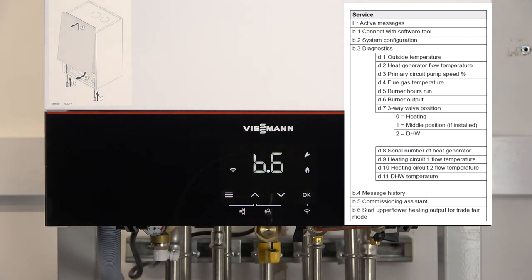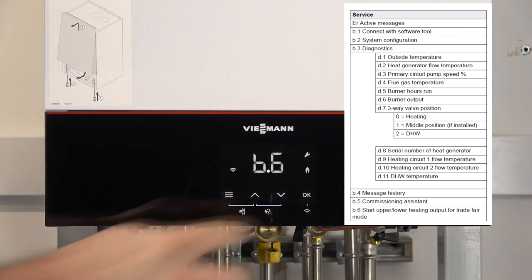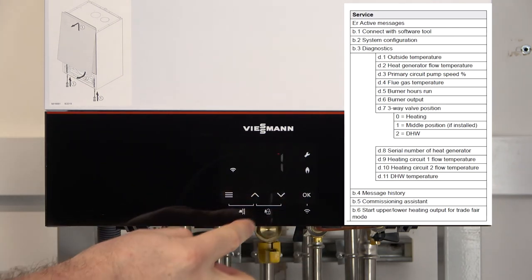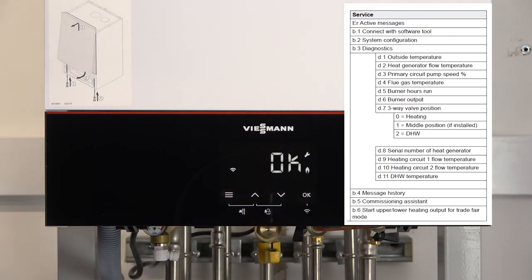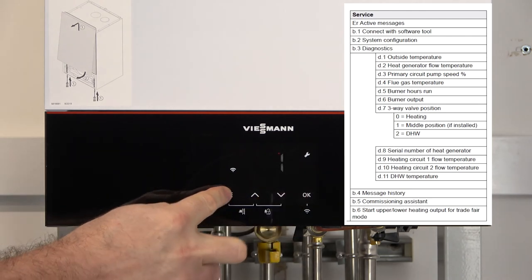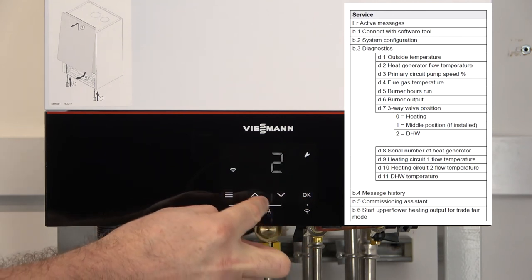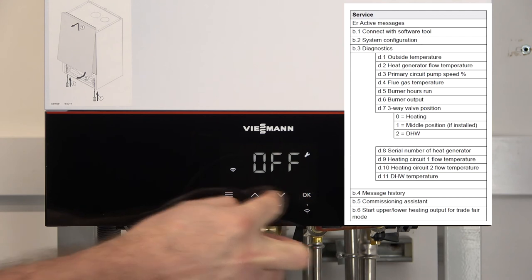And the last one we can see is B6. This one you'll be using more frequently because this is where we set the boiler into high and low. So we press OK. And at the moment it's off. So we press up to one. And this puts our boiler into high and low by going through one and two. So to B6, and we've got one and two for high and low.